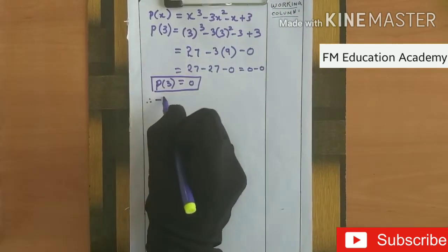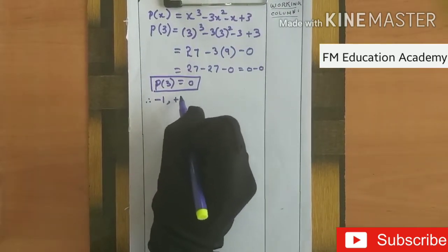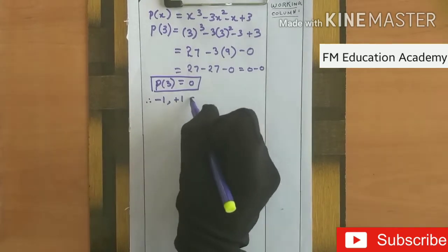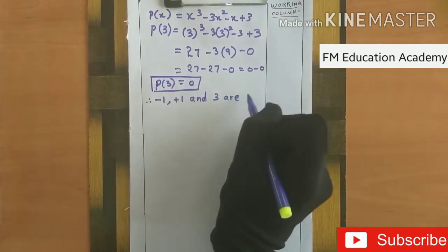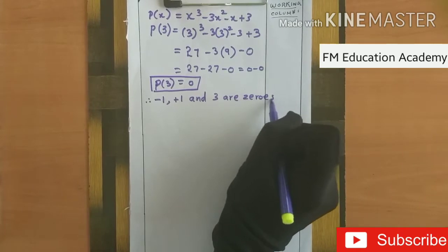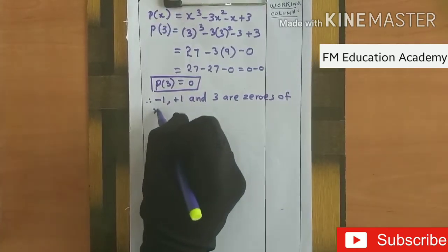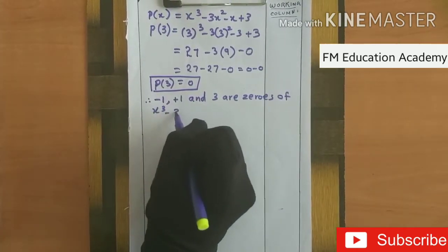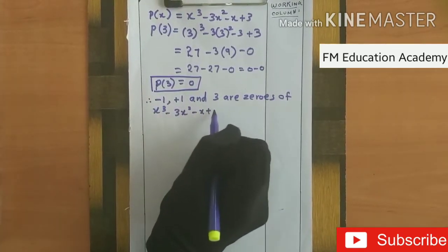Therefore, minus 1, plus 1, and 3 are zeros of the polynomial x³ minus 3x² minus x plus 3.